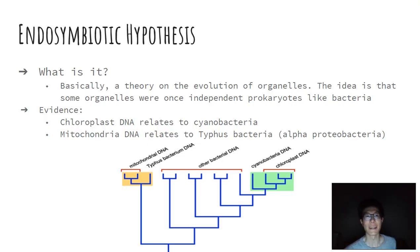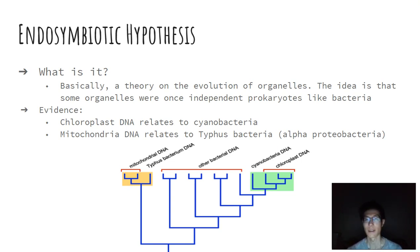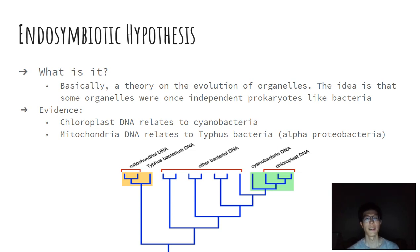But what exactly is the endosymbiotic theory, or the endosymbiotic hypothesis, and why is it important? If you think about it on the general basis of things, there are certain organelles within the cell — for instance, mitochondria, as well as chloroplasts — that have their own DNA.